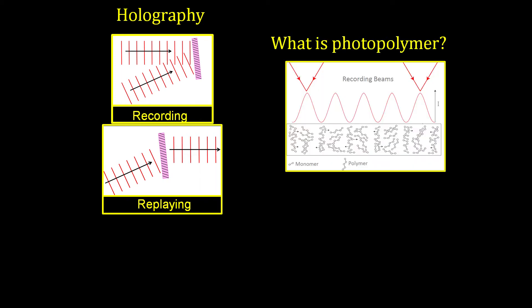The recording material we've used is photopolymer. This is essentially a material made up of monomers, and it undergoes a photochemical effect when exposed to light. In the bright regions you get polymerization, and in the dark regions you don't. This produces a refractive index change in the material, and there you have your refractive structures.